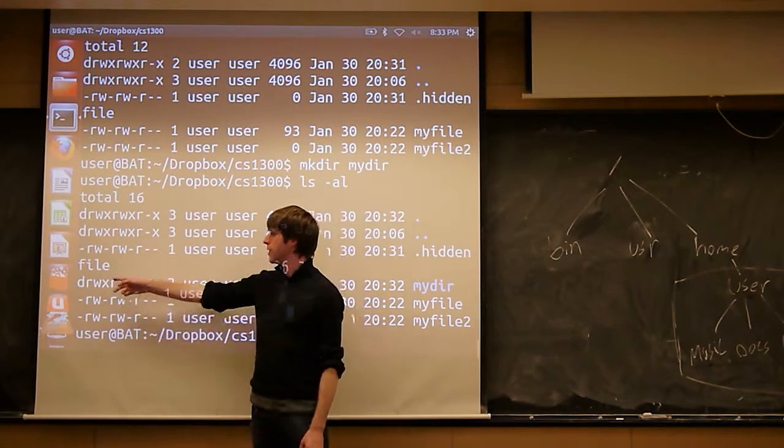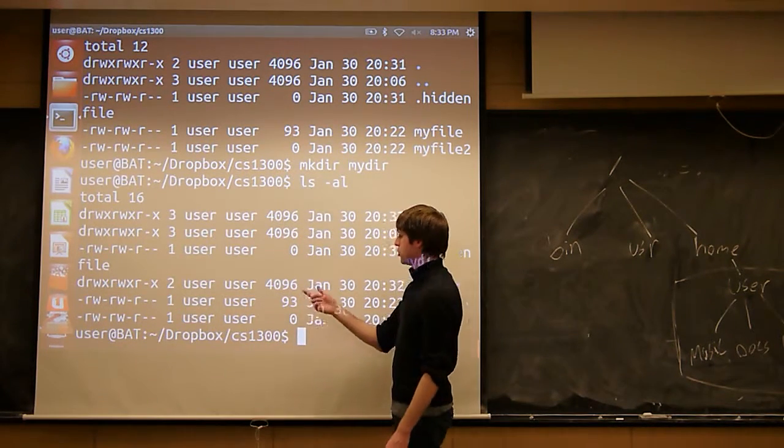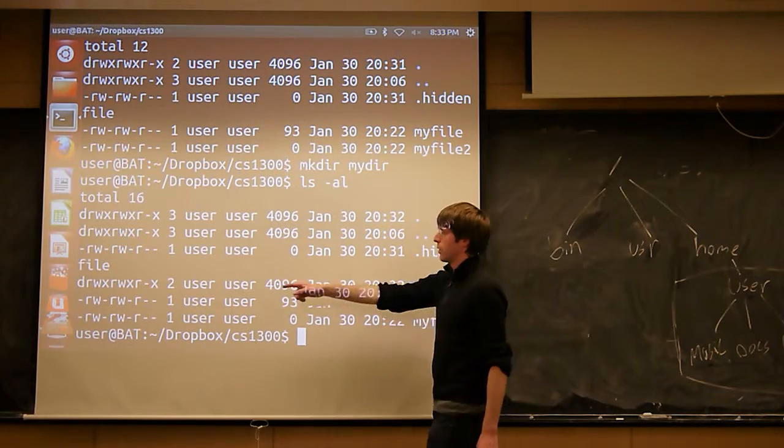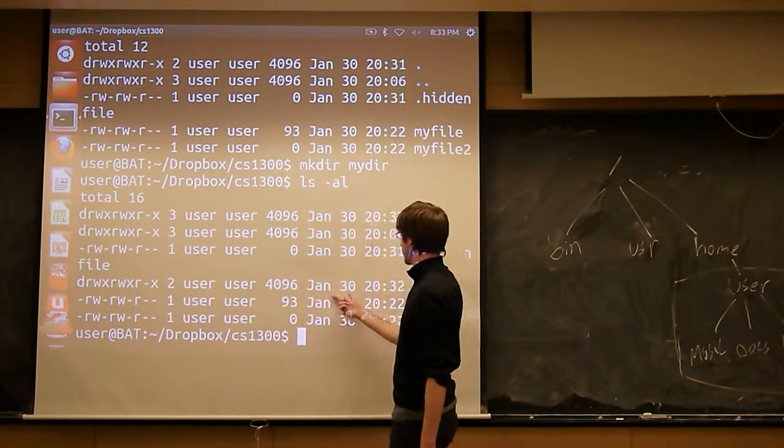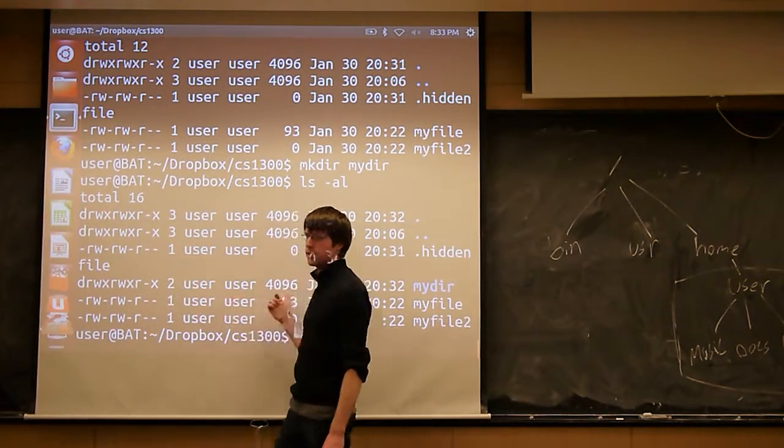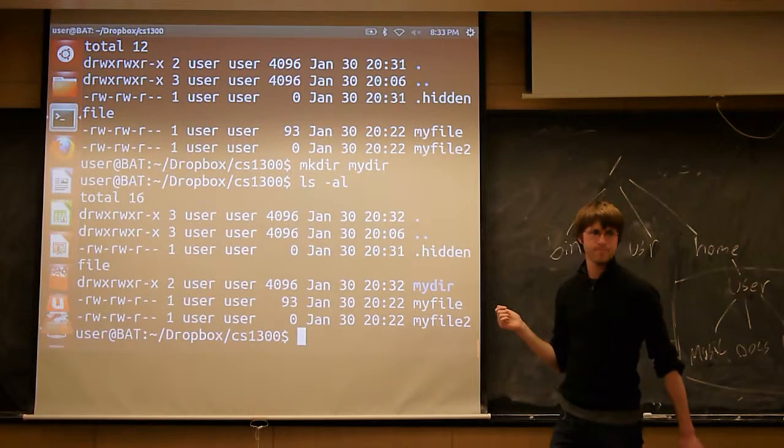With the directory, the execute permission just means you have the right to go into that directory. So in this case, we have the execute permission. That means that we can do cd into my directory. If we didn't have this x here and I tried to cd into my directory, it would give me an error.